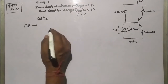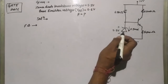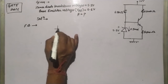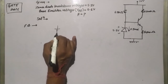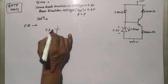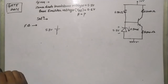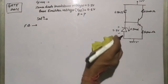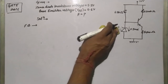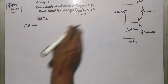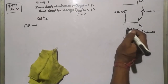Since the Zener diode is working in the breakdown region, we can convert it into a voltage source equal to 5.3 volts. Let's replace the Zener diode with this voltage source.